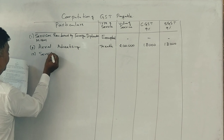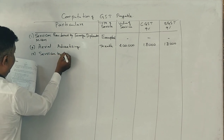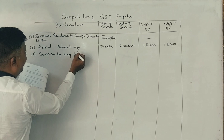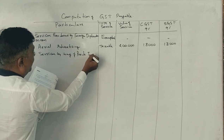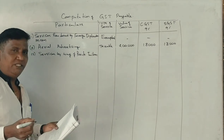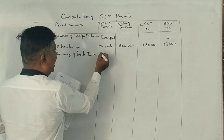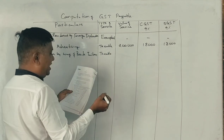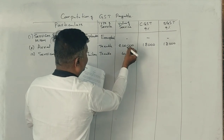Point 3 is services by way of private tuition. It may be a taxable service. So, 60,000 rupees is charged.